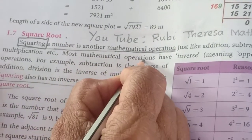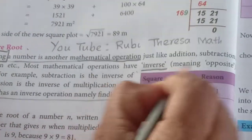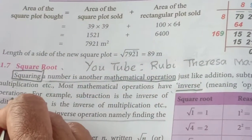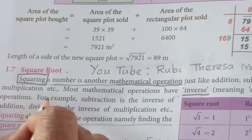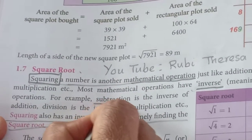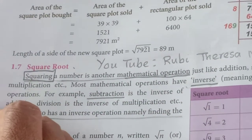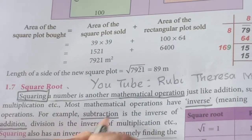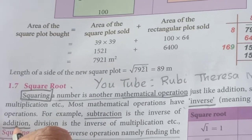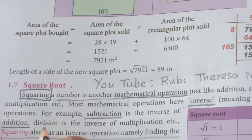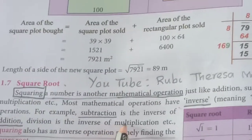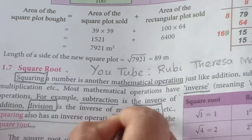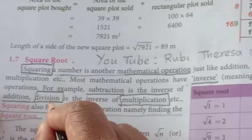Most mathematical operations have inverse, that is, opposite operations. For example, subtraction is the inverse of addition — it is the opposite operation of addition. What is the opposite of subtraction? Addition. What is the opposite of addition? Subtraction. Division is the inverse of multiplication, and multiplication is the inverse of division.